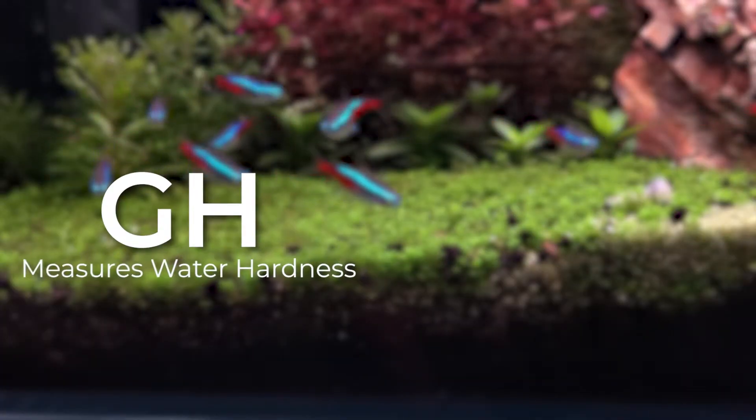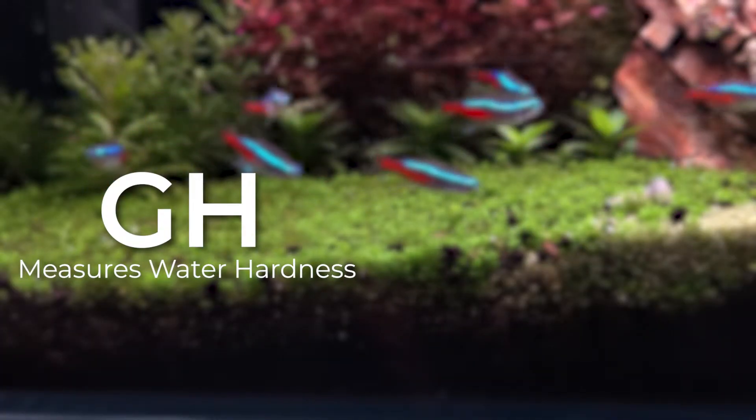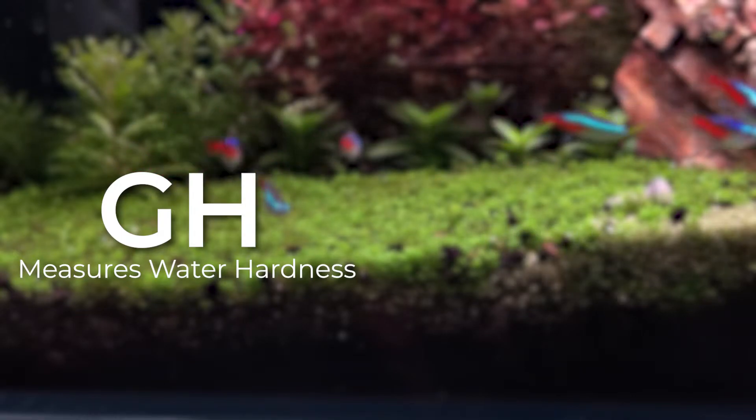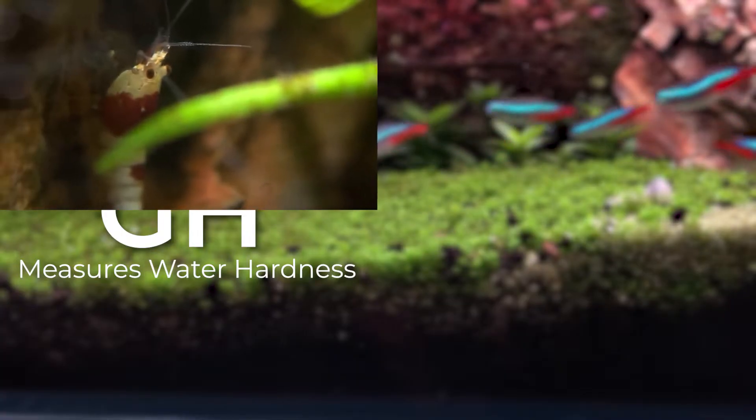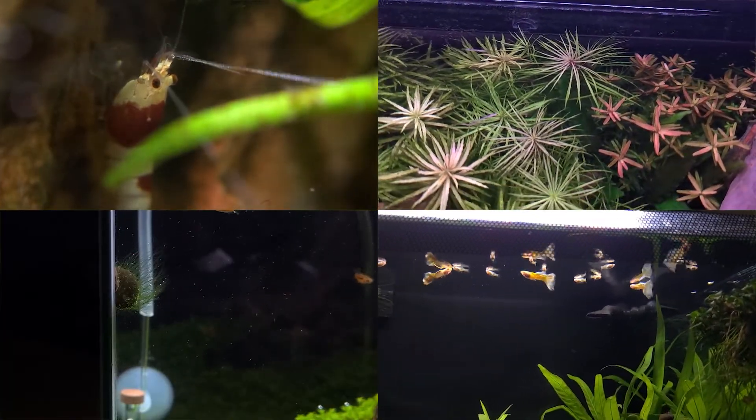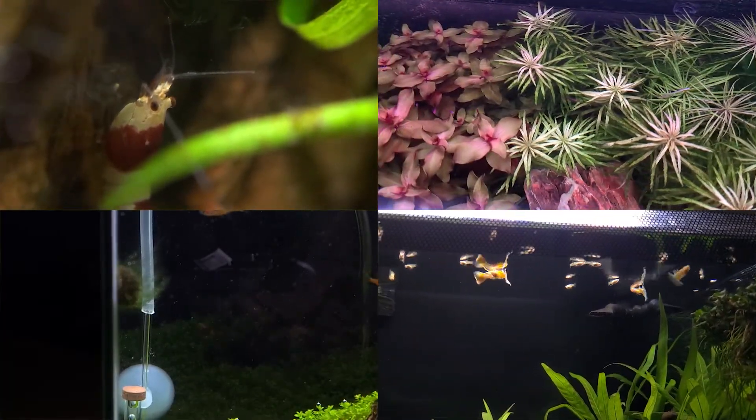Now, GH measures the hardness of the water. More specifically, calcium and magnesium ions. GH is also essential for a multitude of biological functions, such as shrimp molting, plant health, snail shell development, and fish health. So, if you're experiencing any issues with those, please check your GH values.